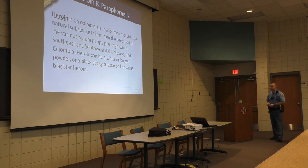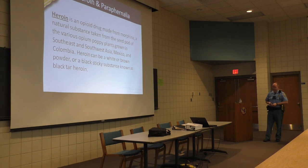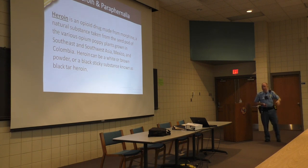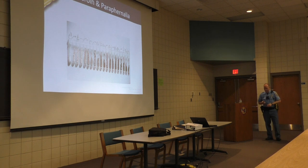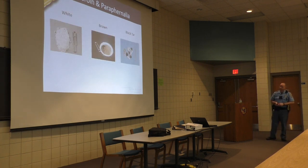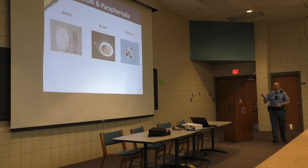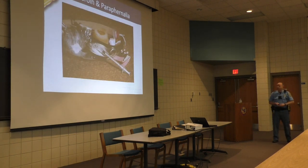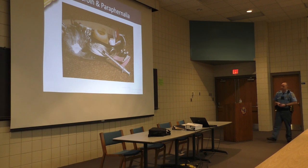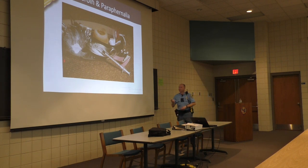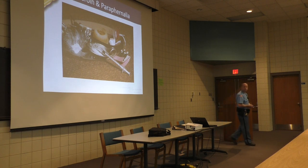Heroin is an opioid made from morphine. It comes from the poppy plant, which is indigenous to Southeast Asia, Mexico, and Colombia. It varies in color from black tar heroin all the way to white. Paraphernalia associated with heroin includes spoons, candles, syringes, and usually some sort of cellophane to store the actual heroin itself.